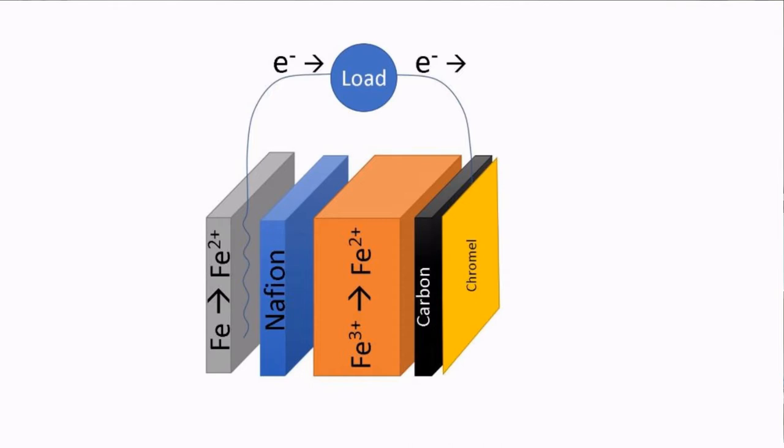The way an iron cell works is we have an iron anode, and on the other side we have an iron salt, an iron 3+ cathode, and the oxidation of the iron to iron 2+ is coupled to the reduction of the iron 3+ to iron 2+.